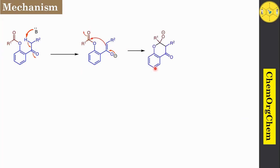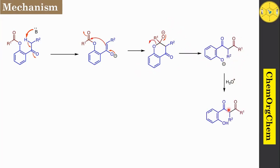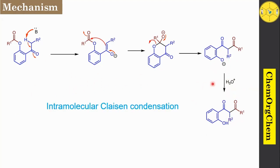Followed by this π electron moving towards this oxygen atom, which results in the generation of a tetrahedral intermediate. After the generation of the tetrahedral intermediate, this carbon-oxygen bond cleaves to produce this corresponding intermediate. When you do acid workup, it readily picks up the hydrogen atom from acid, which readily produces this 1,3-dicarbonyl compound. Simply, we can say this is an intramolecular Claisen condensation type of reaction.